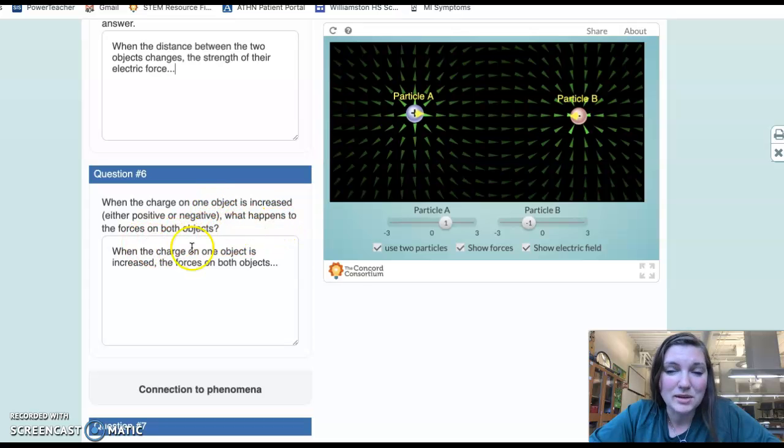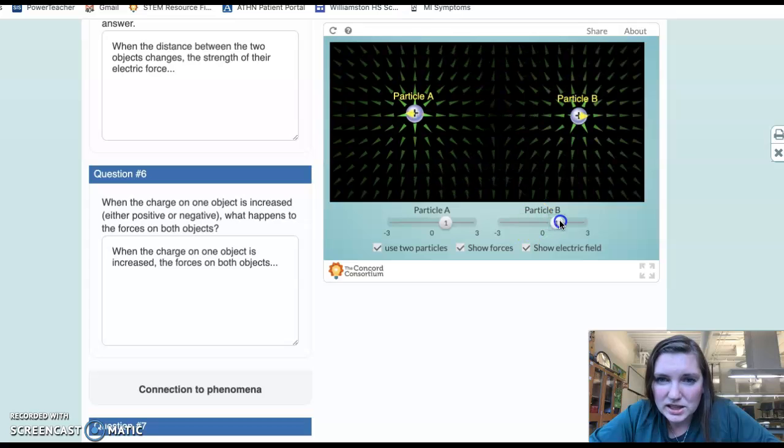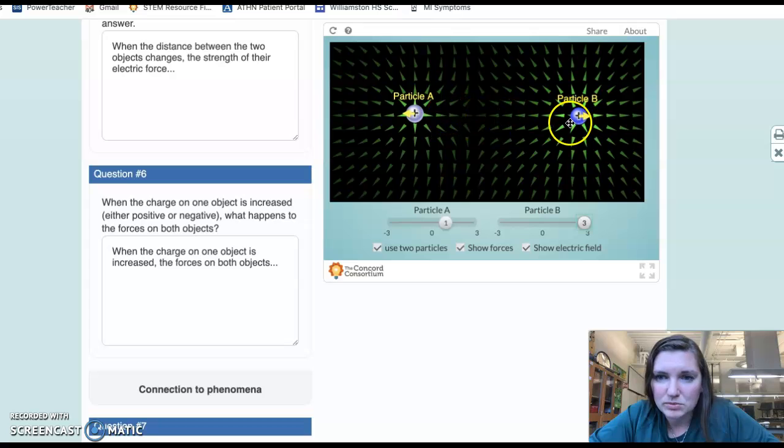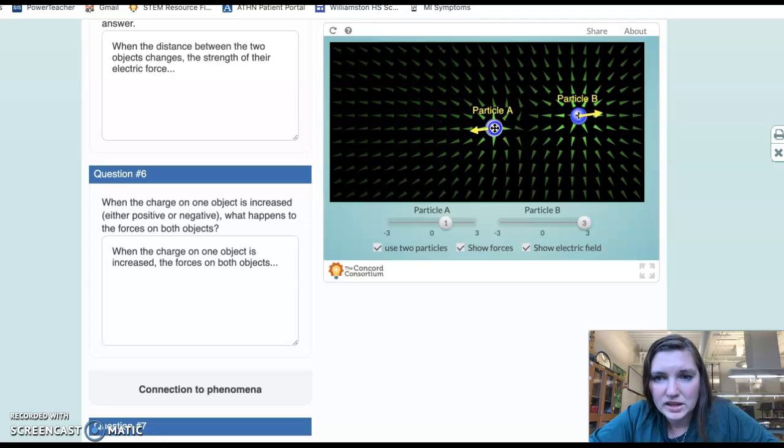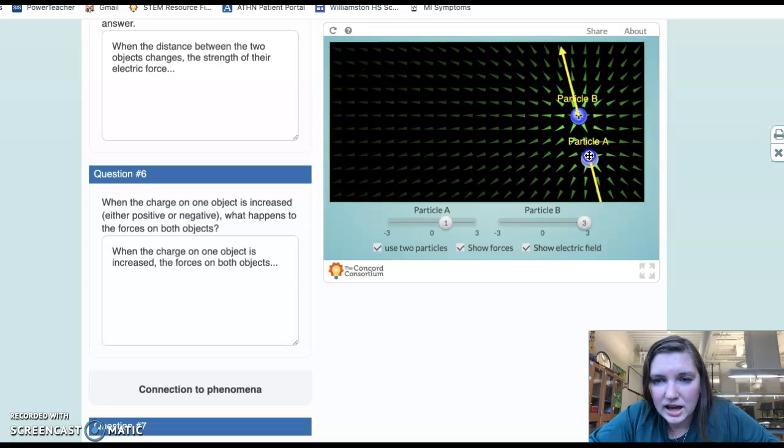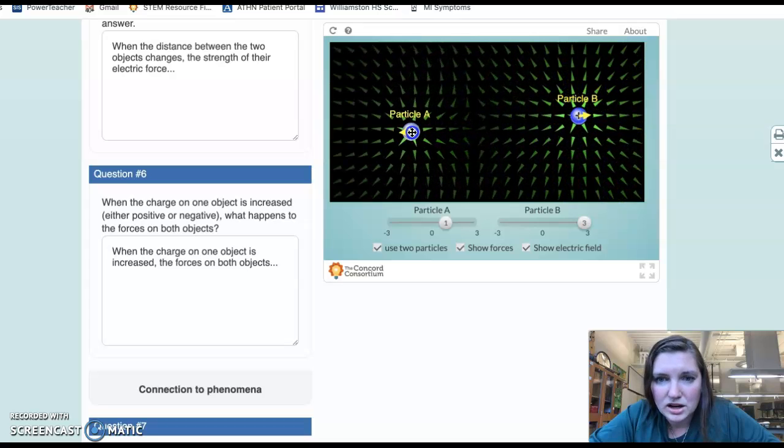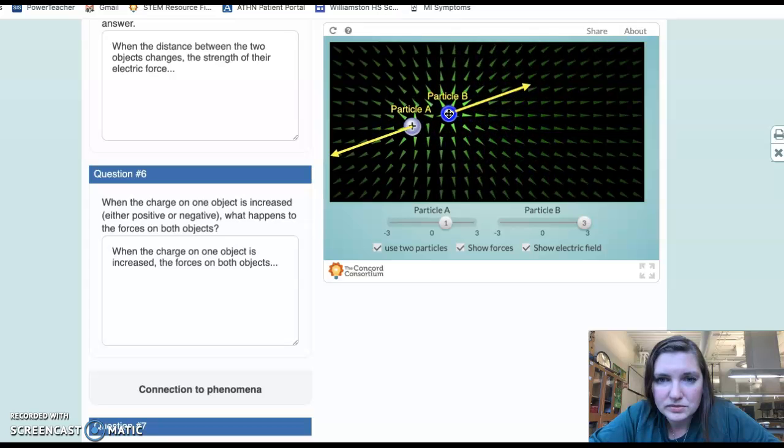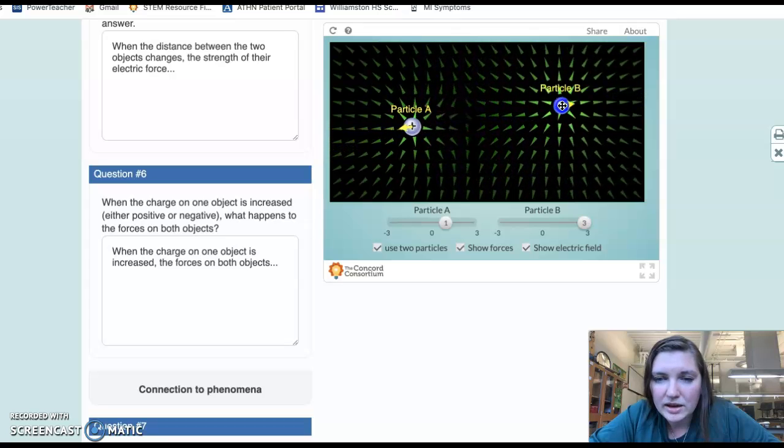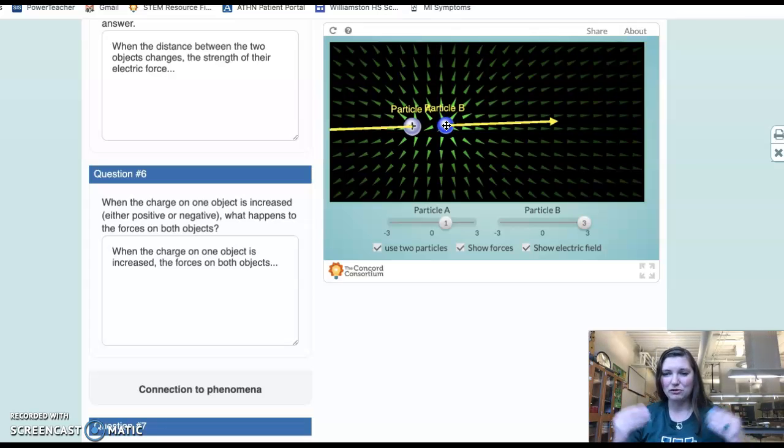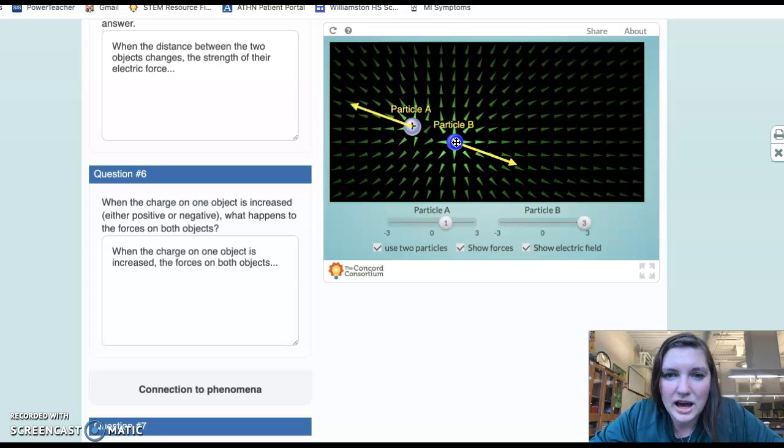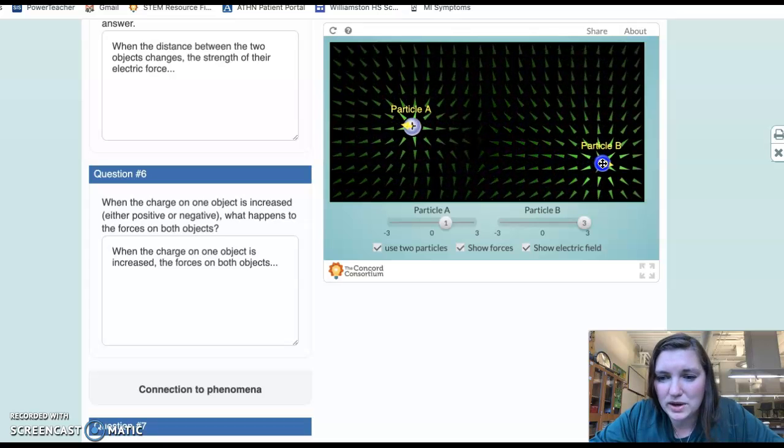However, when the charge on one object is increased, either positive or negative, what happens to the forces on both objects? So, yeah, let's just change one of these, make it so that they have one is more supercharged positive, and the other one is mildly charged positive. So, yeah, I mean, we still see that there's that repulsion, and that it gets a lot when they get closer to each other. But, yeah, so that charge is kind of, I mean, the force between them is evenly split between the two of them. A lot when they're close, less when they're farther away. Okay?